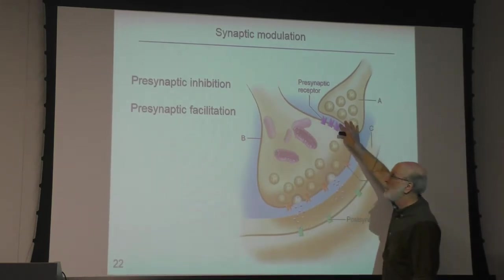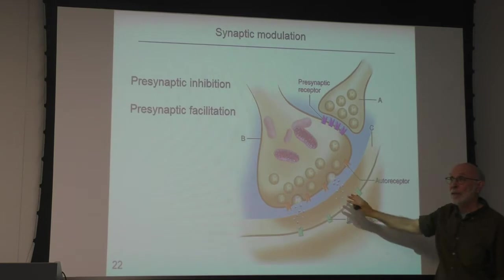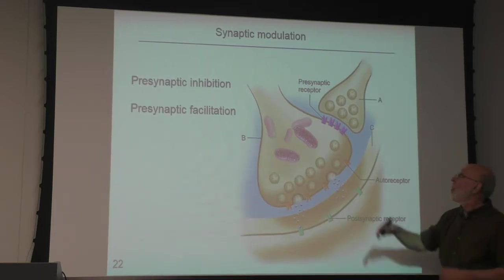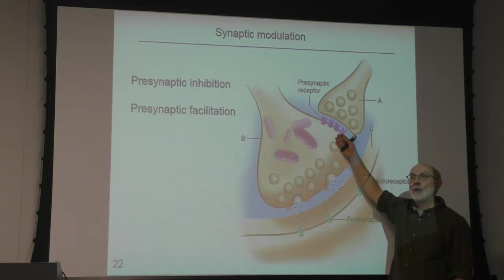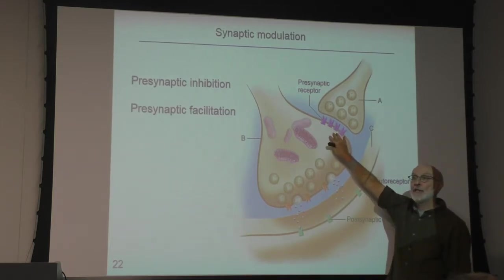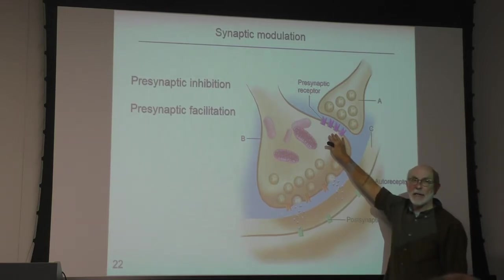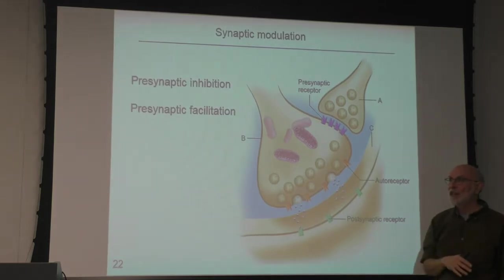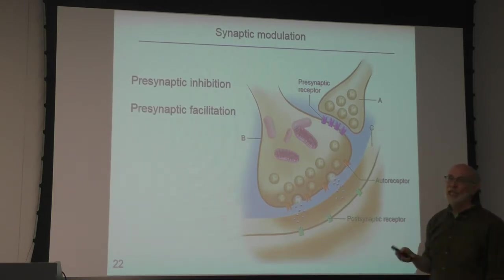Is that clear? This synapse facilitates the release of neurotransmitter at the other synapse. Facilitation is just amplification. What if this receptor was coupled to GI? GI inhibits adenylyl cyclase, but some GI-coupled receptors also activate potassium channels — a G-protein-activated potassium channel called GIRK: G for G-protein, K for potassium, IR for inward rectification, which refers to biophysical properties.